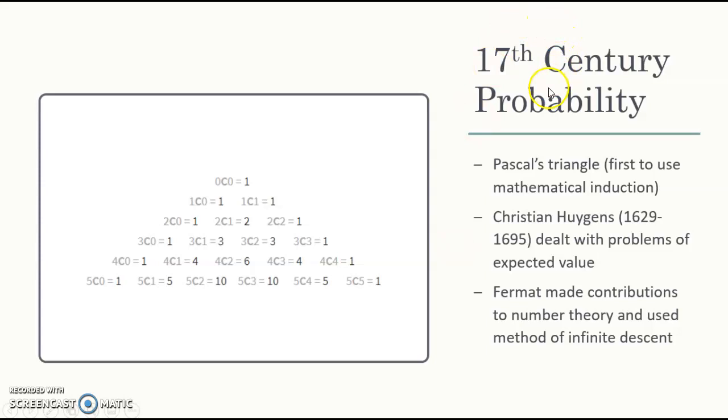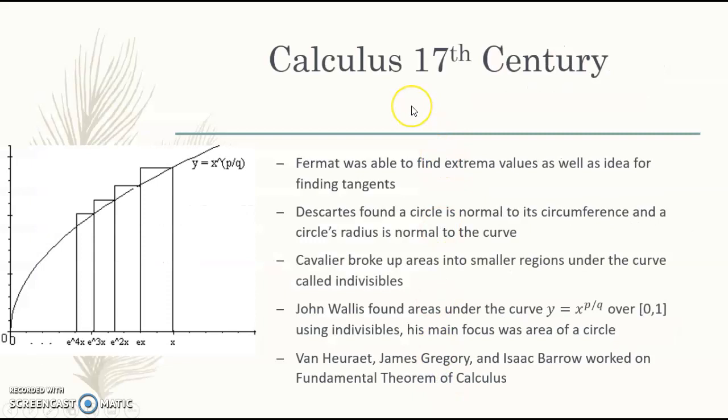Moving on to 17th century probability. Here we see a picture of Pascal's triangle. He was one of the first people to use mathematical induction for this. Looking at the picture right here, the number below is a combination of the first two added together. So 1 plus 4 is 5, 4 and 6 is 10, and that's how Pascal's triangle goes. We also have Christian Huygens, who dealt with the problems of expected value. And we also have Fermat, who made contributions to number theory and used method of infinite descent.